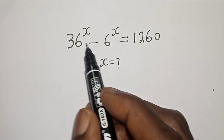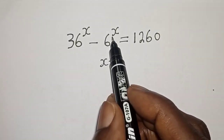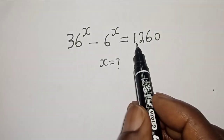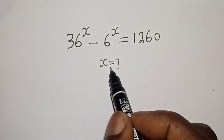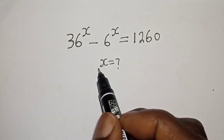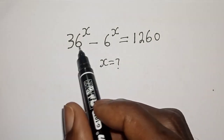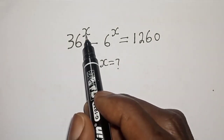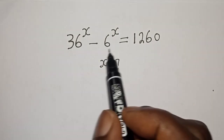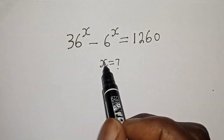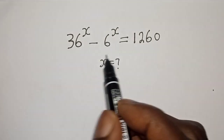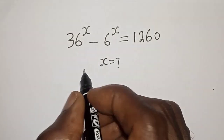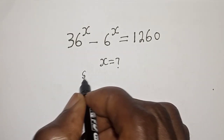36 raised to power x minus 6 raised to power s is equal to 1260. What is the value of s? Hi everyone, welcome to my class. In this class we want to find the value of s. But before we proceed, please don't forget to like, share, comment and subscribe.